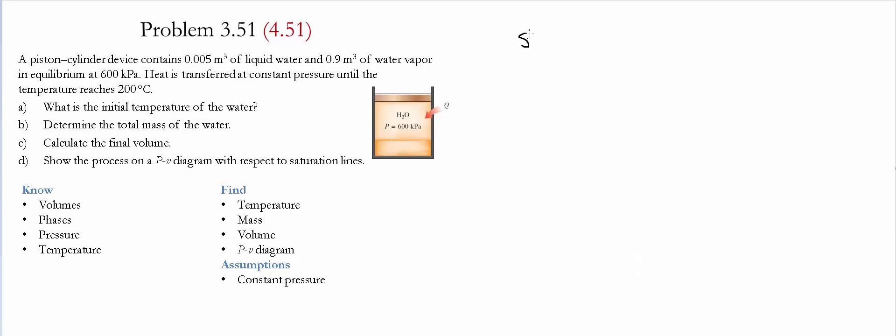For state 2, we know that the pressure remains constant at 600 kilopascals, and we are given that the temperature at that particular state is equal to 200 Celsius. Therefore we're going to go to table A5 to determine the phase of this particular state.